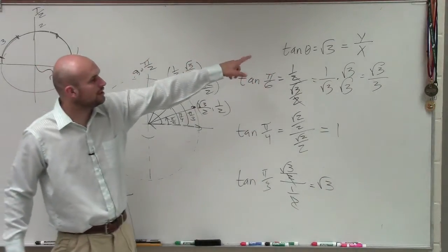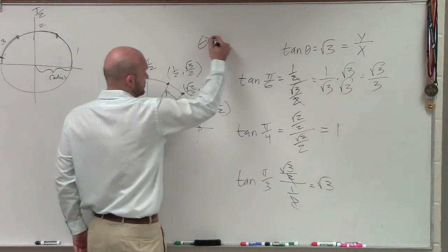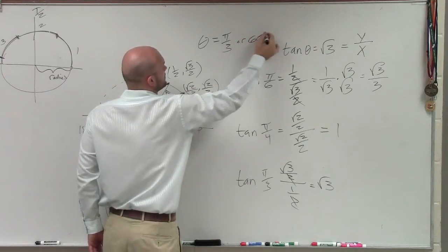And I'm left with square root of 3. So therefore, what is the angle of tangent of theta when it's equal to the square root of 3? That angle is going to be π over 3, or 60 degrees.